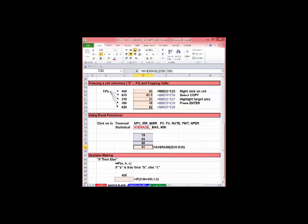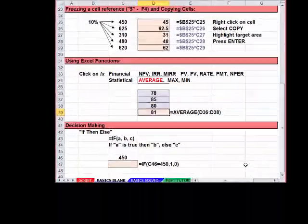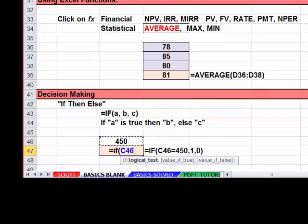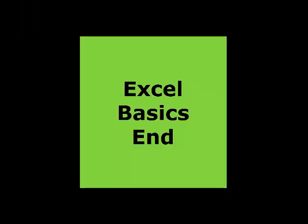The last topic I want to look at is the if-then function. If any of you have done any programming, you're familiar with the basic if-then decision statement. Excel has a logical if-then function, which can be very useful. It basically takes the form of, if A is true, then B else C. And in this simple example, if cell C46 is equal to 450, I want to put a 1 in C47, otherwise zero. Equals if that. This has been a very quick review of some of the features of Excel that will be very useful in this course.